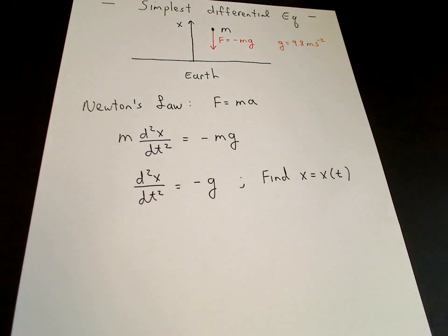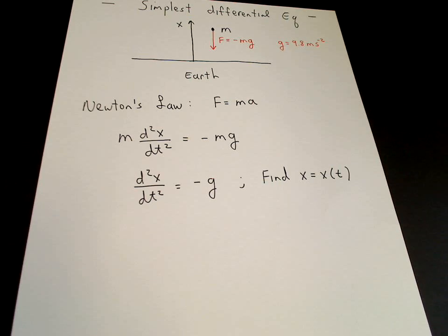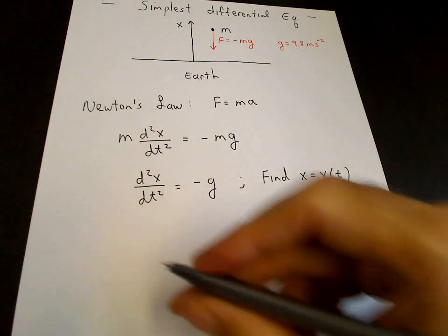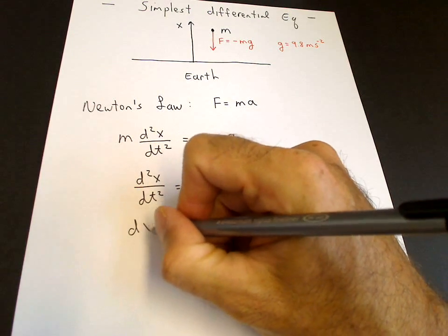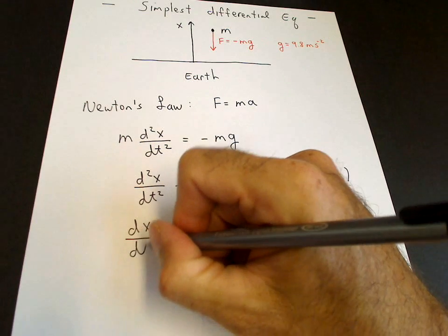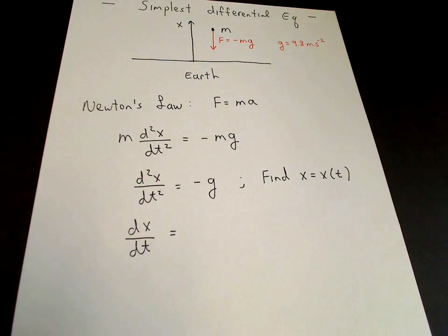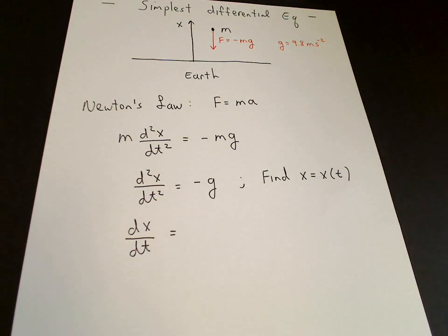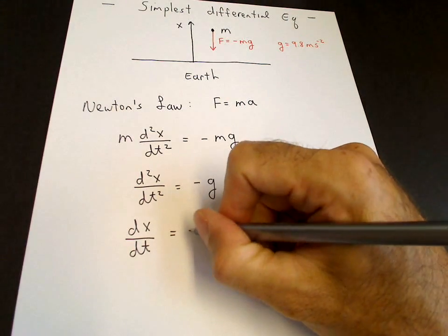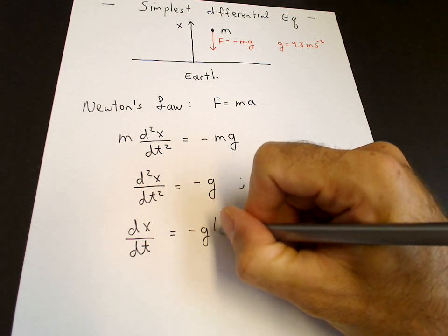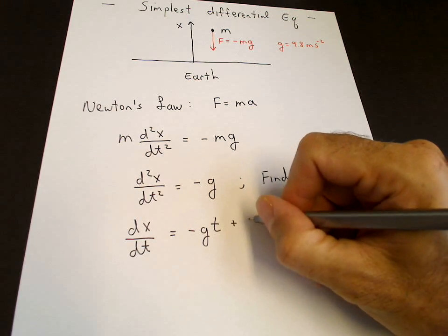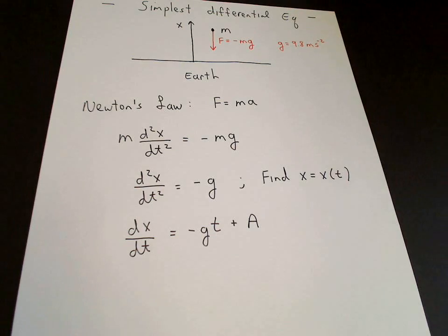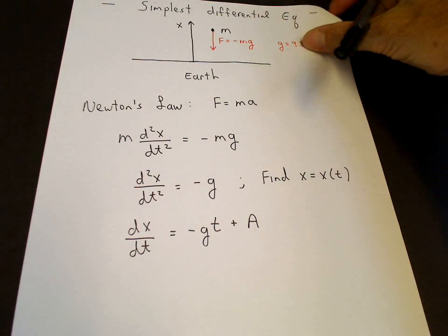So if we take the antiderivative of the left hand side, we get the first derivative plus a constant which we'll put on the right hand side. If we take the antiderivative of minus g, we get minus g times t, and here we insert our integration constant a.